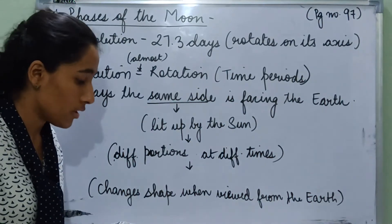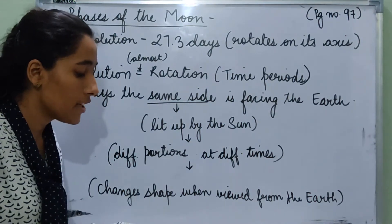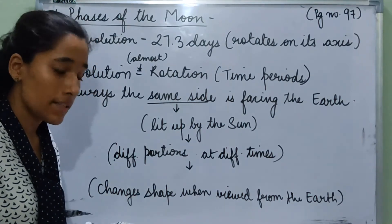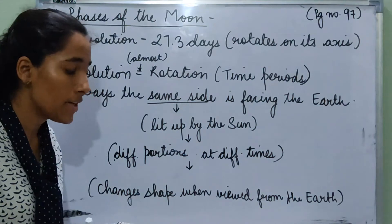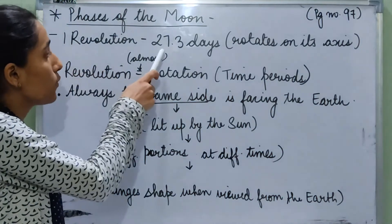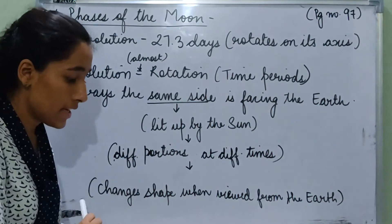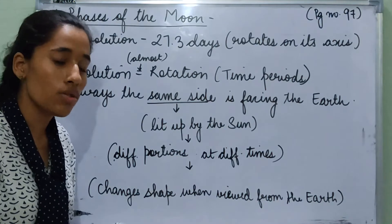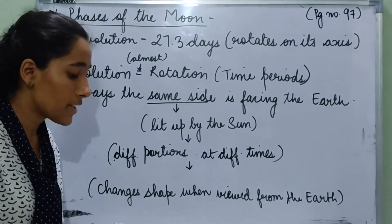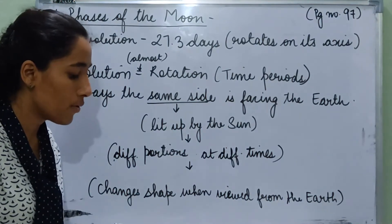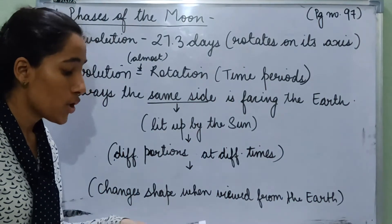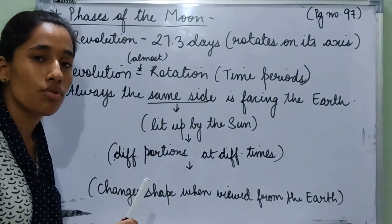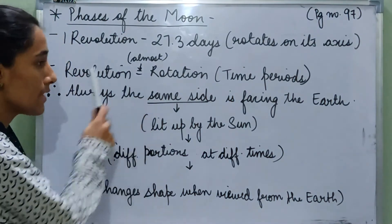Phases of the moon. The moon revolves around the earth every 27.3 days. It also rotates on its own axis, just like earth. The time periods of rotation and revolution of the moon are almost the same — the time taken by the moon to complete one rotation and one revolution is both almost the same.